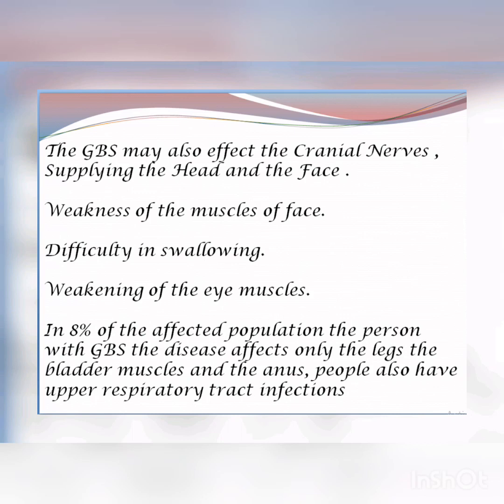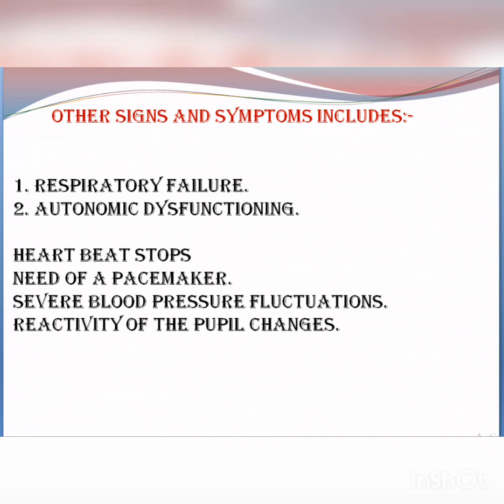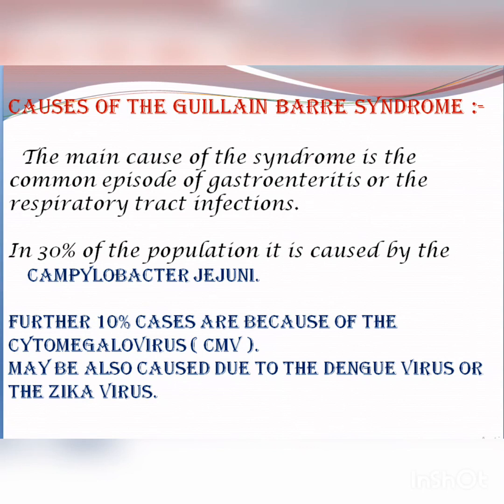In some patients with Guillain-Barré syndrome, the disease affects only the legs and the bladder muscles. Other signs and symptoms include respiratory failure, which means a person undergoes respiratory tract infection in the upper respiratory pathway. Autonomic dysfunction refers to the heartbeat stopping or irregular heartbeats, and changes in pupil reactivity where the pupil cannot properly constrict or dilate.